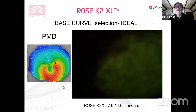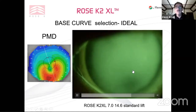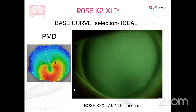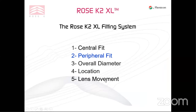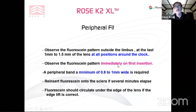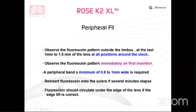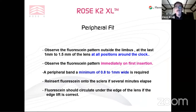Here is a pellucid case — we look for the steepest part at 270, not superiorly as with typical cones. You can see at the highest point, when the patient blinks, touch just appears and then disappears — quite acceptable. Now, peripheral fit: observe the fluorescent pattern outside the limbus at all positions around the clock. You can judge the fluorescent pattern immediately on first insertion. You're looking for a band of fluorescence at least 0.8 to 1 mm wide or even slightly wider. You can reinsert fluorescence onto the sclera — if you put it in the bowl of the lens and don't look at the edge lift immediately, it will dissipate and look tight.